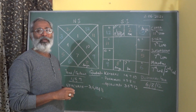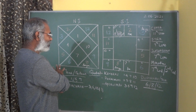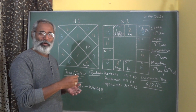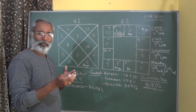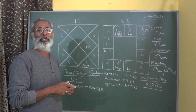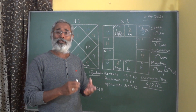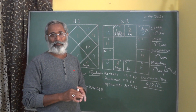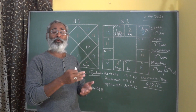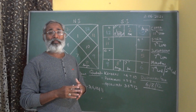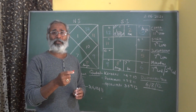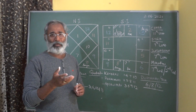You should understand that all these planetary placements in these houses will give different types of results. You need to understand these terminologies. Whenever I say Trikona, you should immediately relate it to 5 and 9. Along with that, 1 is also there — 1 has both the qualities of being a Trikona and also a Kendra. These terminologies are very important to understand.